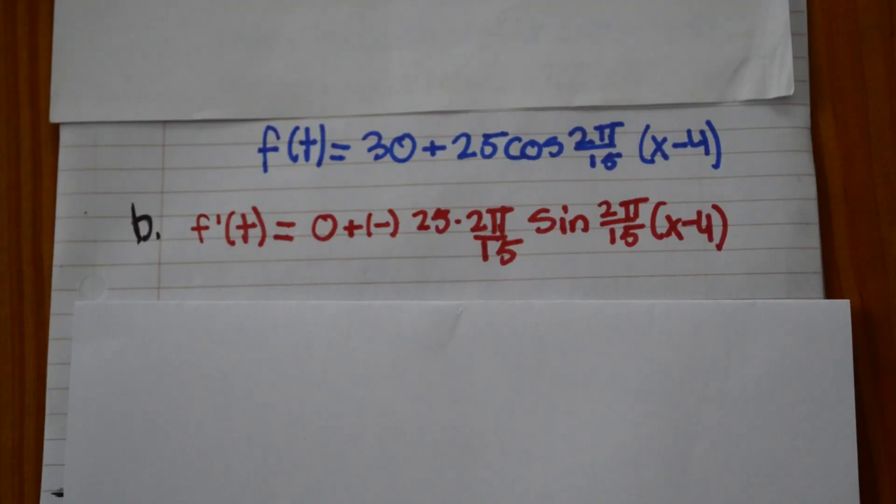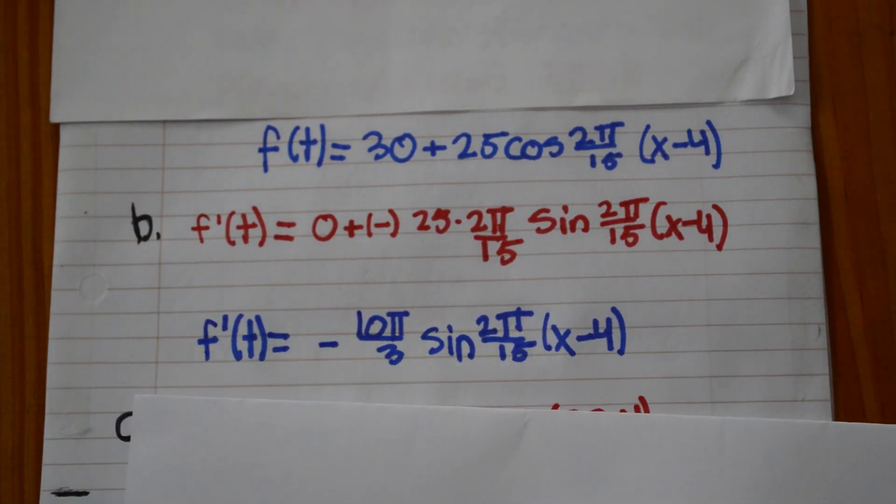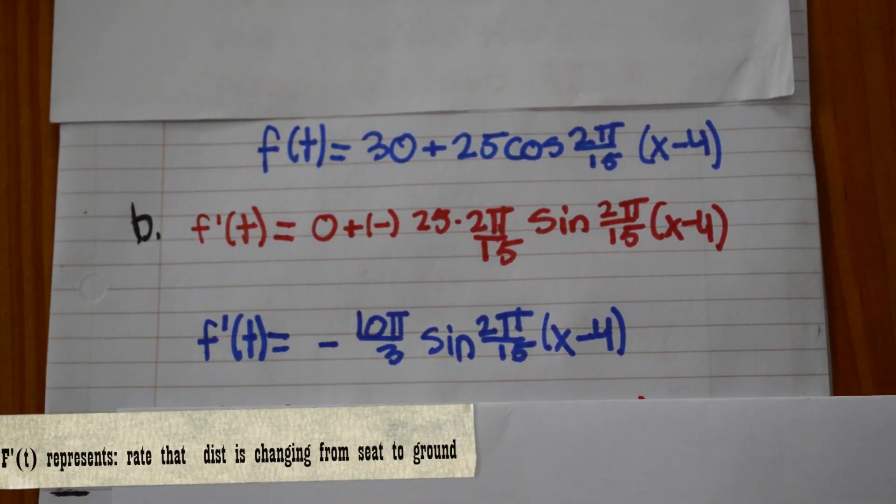The derivative of f(t) is f'(t), and since 30 is a constant, the derivative of a constant is 0. Then you do the derivative of the inside function. So you do 25 times 2π over 15, and then you multiply that by the derivative of the outside function. So it becomes negative sine. You multiply by negative sine 2π over 15 times x minus 4, and then you end up with negative 10π over 3 sine 2π over 15 times x minus 4.